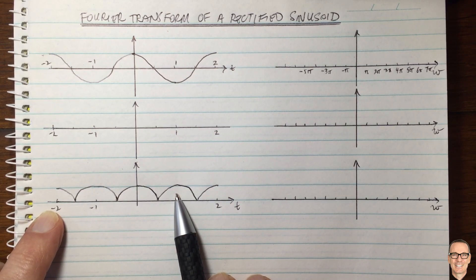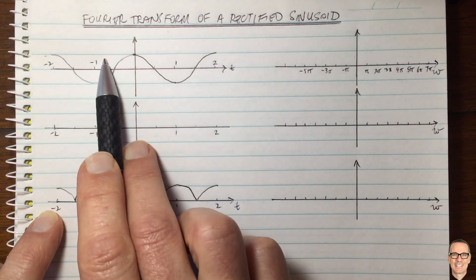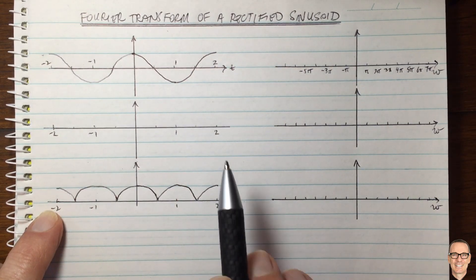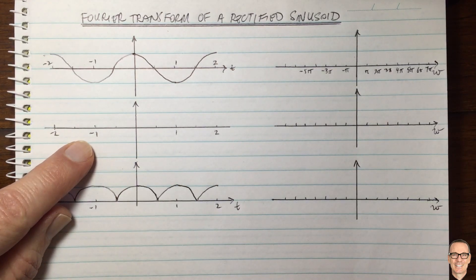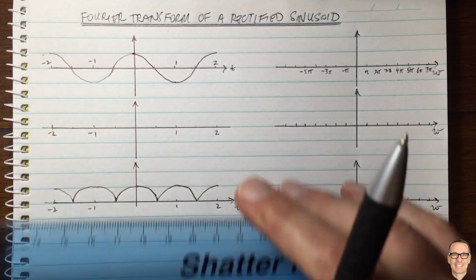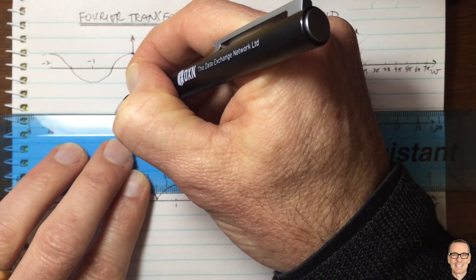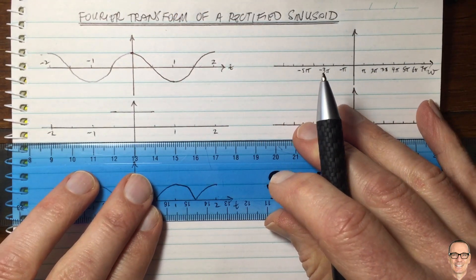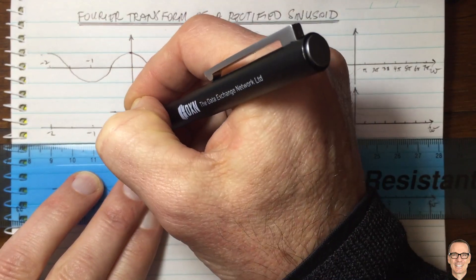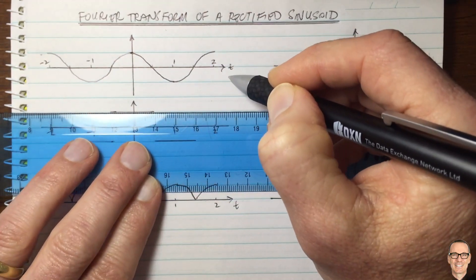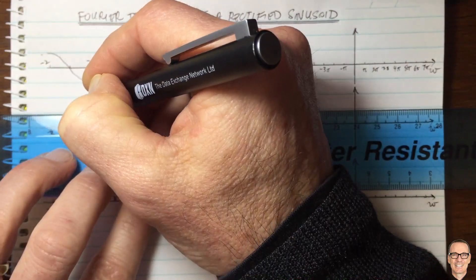This is relevant in communication systems and other digital electronic applications. How do we go from the sinusoid to the rectified waveform? We can multiply by a square waveform that equals 1 over the range where the signal is positive, and equals negative 1 over the range where the signal is negative. Multiplying those together gives us our rectified waveform, and this will help us calculate the Fourier transform.